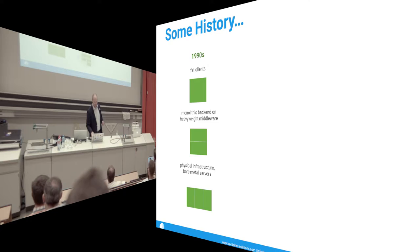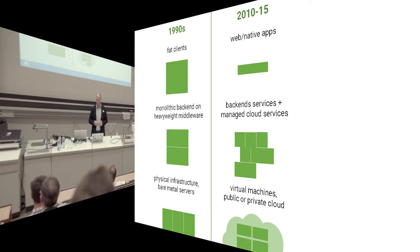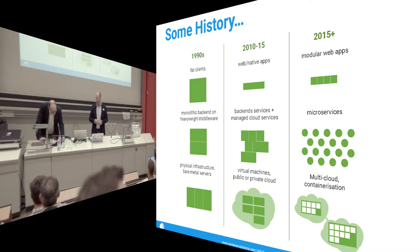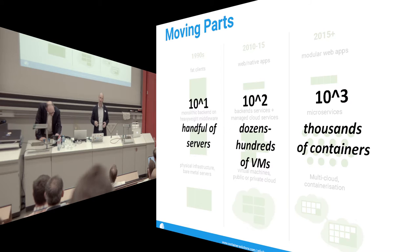A few years later the cloud came along, and the cloud made it possible to decompose your applications more easily into different services, using things like polyglot persistence and other technologies. This trend continued and today we have microservices, decomposed even further using containers, which allows you to use these microservices across different clouds — the latest fad of multi-cloud systems.